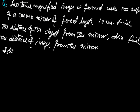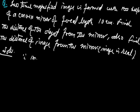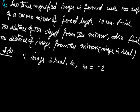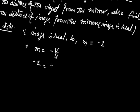Solution. The image is real. Because the image is real, the value of magnification M will be minus 2. Because M equals minus V upon U, minus 2 equals minus V upon U. It implies that the value of V equals 2U.